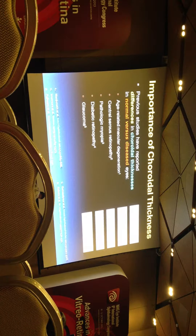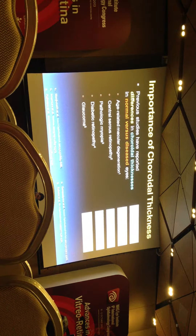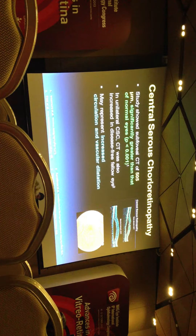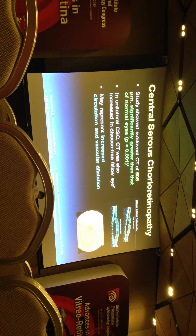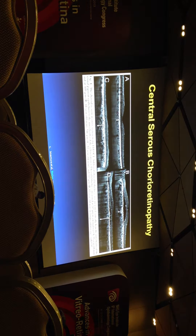Various studies have already described differences in choroidal thickness compared to normal eyes in AMD, Central Serous Retinopathy, and pathologic myopia. The evidence for glaucoma is a bit more scattered. One common feature described since we've done choroidal imaging is that in Central Serous Retinopathy the choroid is very thick, in the range of 400 to 500 microns. Interestingly, sometimes even in the fellow eye which is not actively involved, there may also be an increase, postulated to be due to increased circulation and possible vascular dilatation. You can see the very thickened choroid in eyes with active disease.